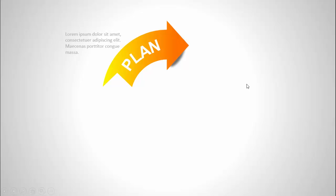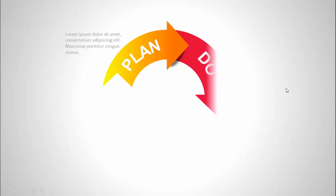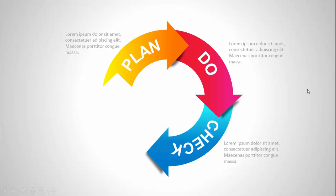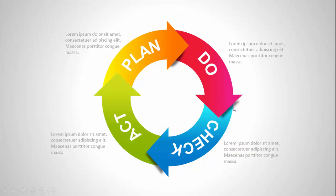In today's tutorial I'm going to show you how to create a PDCA — that is Plan Do Check Act — slide in PowerPoint. This is how the slide works: when I click, the first 'Plan' will come, you can add some detailed text here. When I click again with a different color combination, the 'Do' will come. Then comes the 'Check' and the 'Act', and the cycle continues.